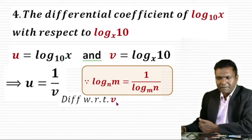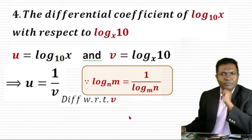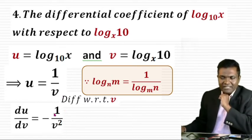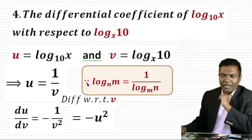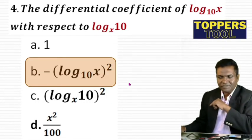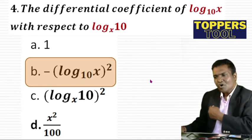Since u = 1/v, we need du/dv — the derivative of u with respect to v. The derivative of 1/v with respect to v is -1/v². Since u = 1/v, we have v = 1/u, so -1/v² = -u². Therefore du/dv = -u², which is the answer.